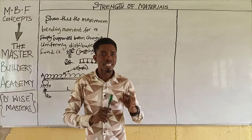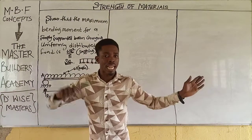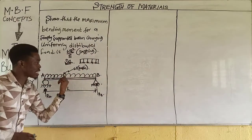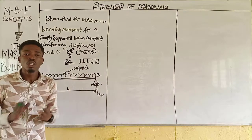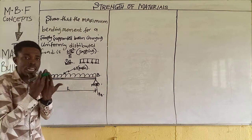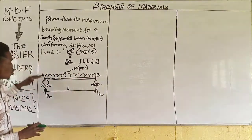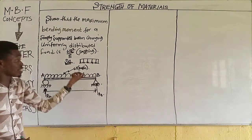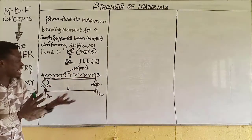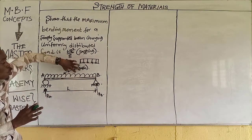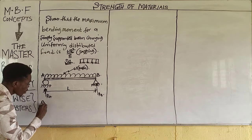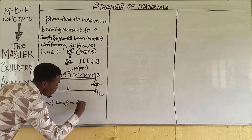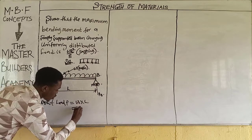When a simply supported beam is symmetrically loaded, the reaction at both ends is the same. Any time you have a UDL, you must convert it to a point load. To convert a UDL to a point load, multiply the load intensity by the span it covers. Since this load covers the entire span, the equivalent point load is W multiplied by L, giving WL.